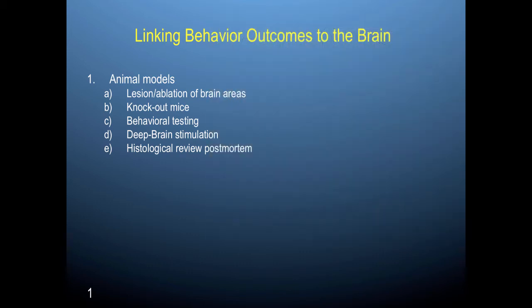Another type of method is deep brain stimulation. Deep brain stimulation is when you put an electrode into the brain and use that electrode to release a small electrical current that impacts the activity of a group of cells, and you see how that affects behavior.